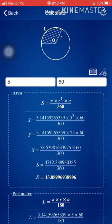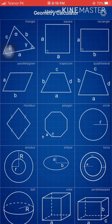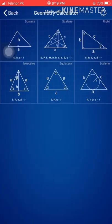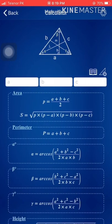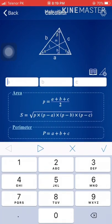Let me go back and come to triangles. Different types of triangles are available — scalene, equilateral, isosceles, and so on. I'm going to try a scalene triangle, which has different side lengths.